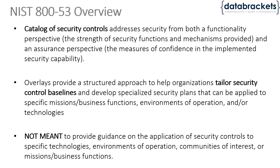853 provides you these differentiations through its catalog, so you can essentially pick and choose what you need — like browsing a catalog and selecting items based on your requirements. It also provides a process and approach to tailor those controls according to your environment, your business mission, and what you need to adopt, including a high-level process for how to tailor baselines into your environment.